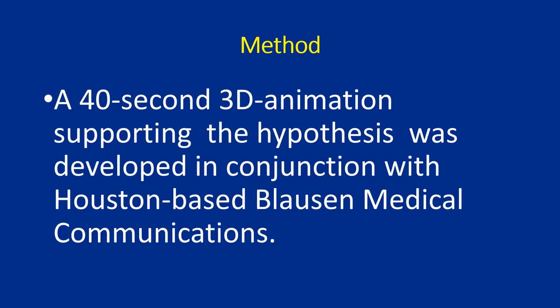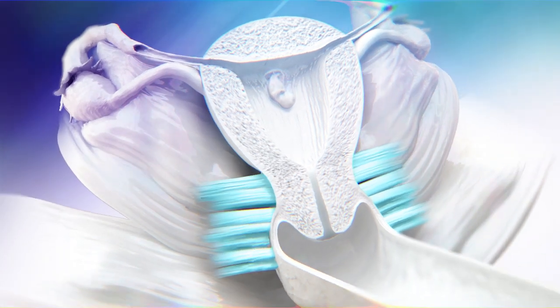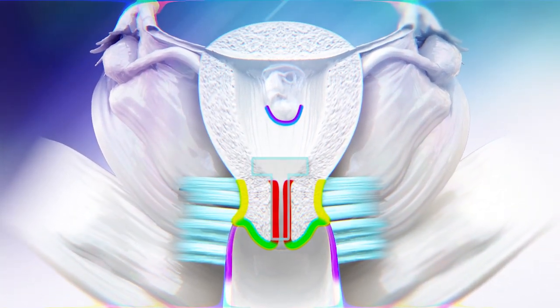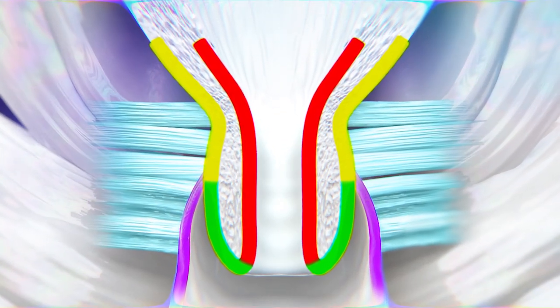A 40-second 3D animation supporting the hypothesis was developed in conjunction with Houston-based Blossom Medical Communications. During the first and second trimester, the cervix is a T-pattern. In the third trimester, uterine contractions transform the cervix to a Y-pattern, then a V-pattern, and finally at full term a U-pattern, with concomitant development of the lower uterine segment cranially. During the progress of labor, the U-shape inverts upward with a complete transformation of the cervix into the lower uterine segment and its disappearance. The cervix regains its shape instantly after delivery due to a reversal of these changes.